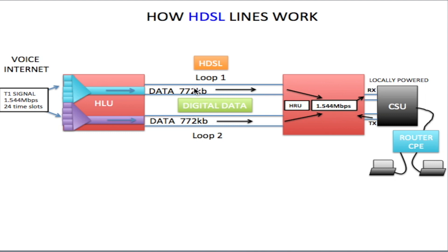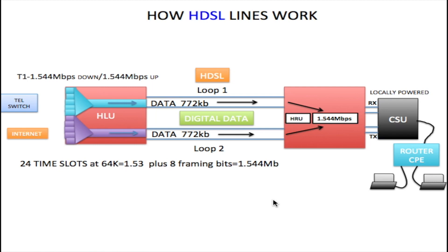This digital signal prevents electromagnetic induction, which causes noise. This noise interrupts the data on VDSL and ADSL lines, causing the speed to fluctuate. Digital data is not as susceptible to electromagnetic induction, so we don't have that fluctuation we get with an ADSL or VDSL line. Another advantage of HDSL is that we have 1.544 megabits per second down and 1.544 megabits per second up — the same speed in both directions, unlike ADSL and VDSL where the download is typically much higher than the upstream.